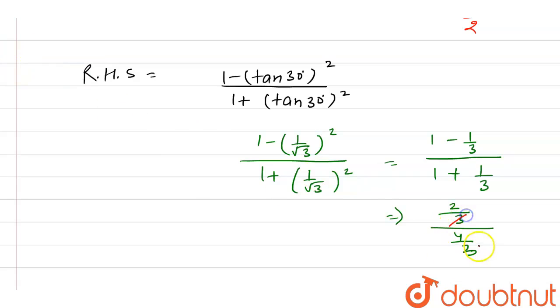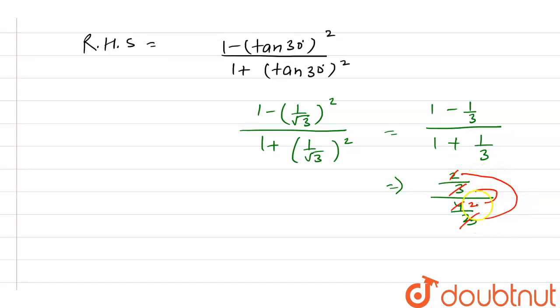Now, you can see this 3 cancels with this 3, and this 2 cancels with this 4 to give 2. When we multiply, we get 1 divided by 2, which is 1/2.